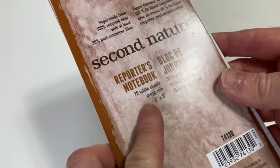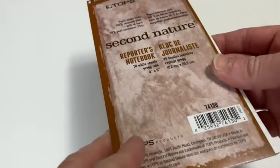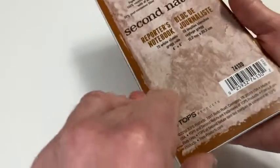It has 70 white sheets, Gregg Rule 4x8. So let's open it up, it's pretty exciting.